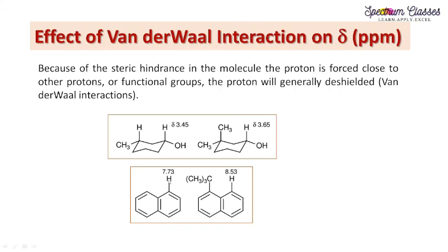As another example, consider a molecule where a proton resonates at 7.73 ppm delta value. When a bulky group is present nearby, this proton resonates at a much more downfield position due to van der Waals interaction. So if we have bulky groups in the nearby vicinity of the proton of interest, that proton will experience a downfield shift because of van der Waals interaction. I hope you find this video informative — please subscribe to my channel. Thank you.